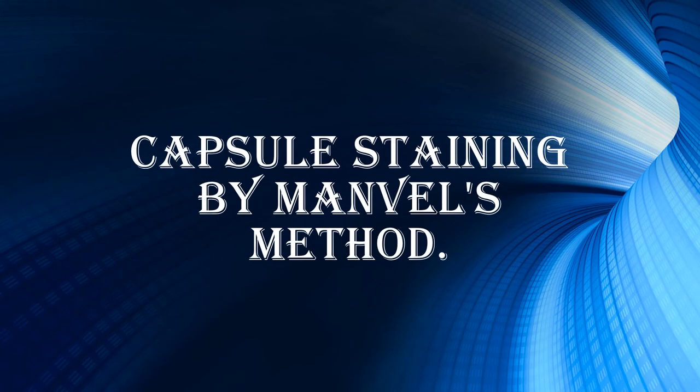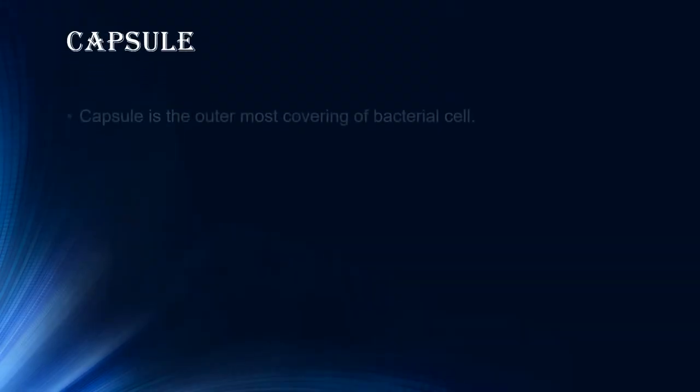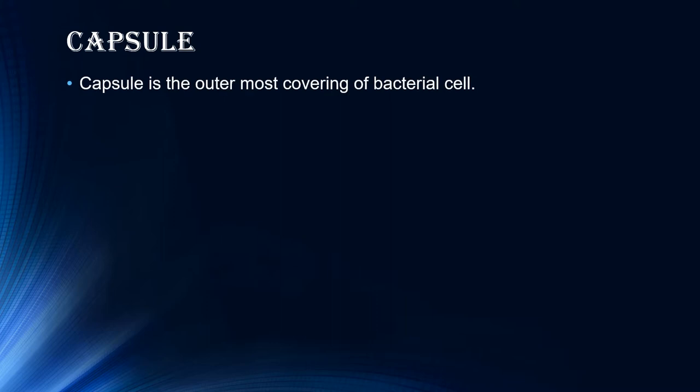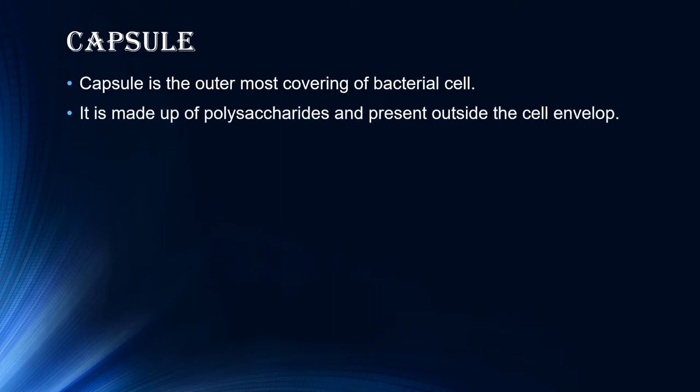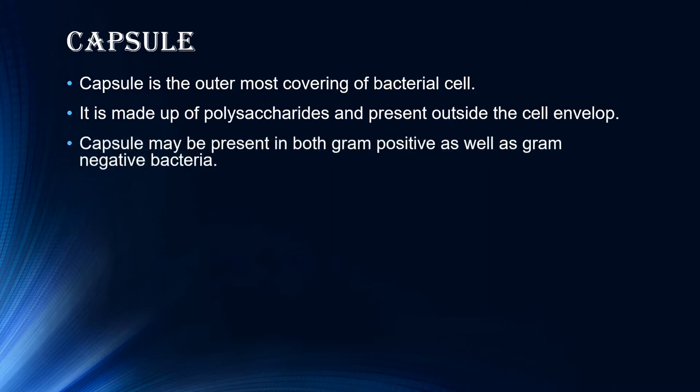Today's topic is Capsule Staining by Manuel's Method. Let's see a short introduction about capsule. Capsule is the outermost covering of bacterial cell. It is made up of polysaccharides and present outside the cell envelope. Capsule may be present in both types of bacteria, i.e. gram positive as well as gram negative bacteria.